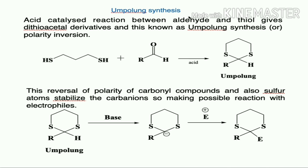The next important reaction where organosulfur compounds are used is umpolung synthesis. Umpolung is an acid-catalyzed reaction between an aldehyde and a thiol that gives a dithioacetal derivative. This umpolung, or polarity inversion, is very important in organic synthesis.